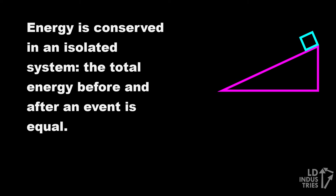Energy is conserved in an isolated system, meaning that the total energy we had before something interesting happened, like before that box slid down the hill, has to be equal to the total energy after that interesting thing happened.